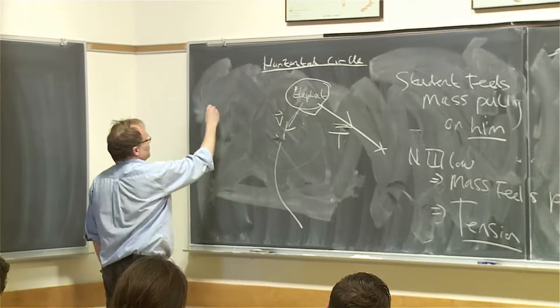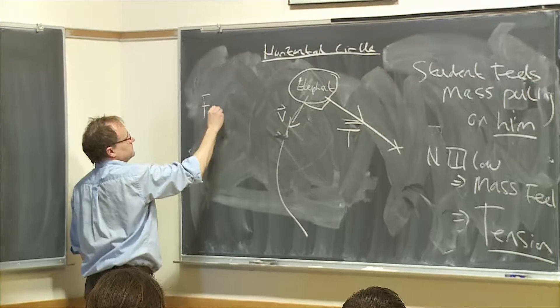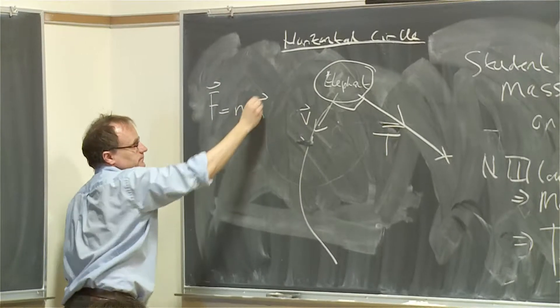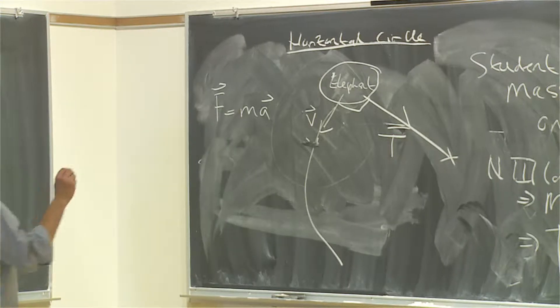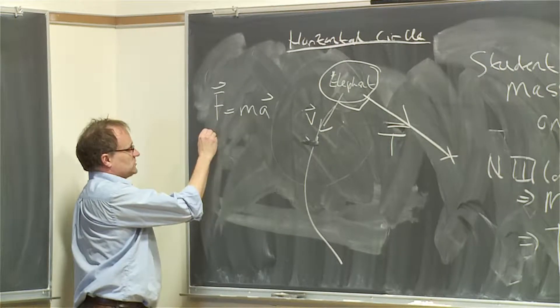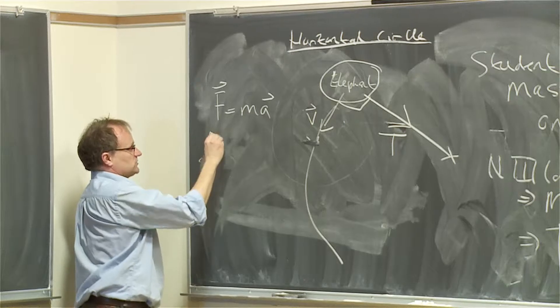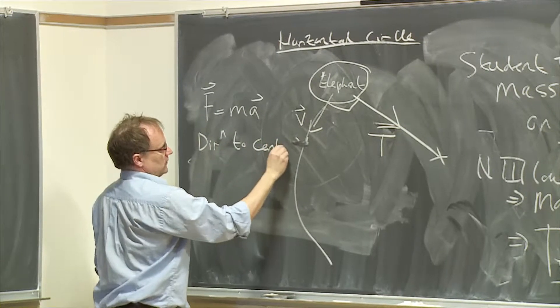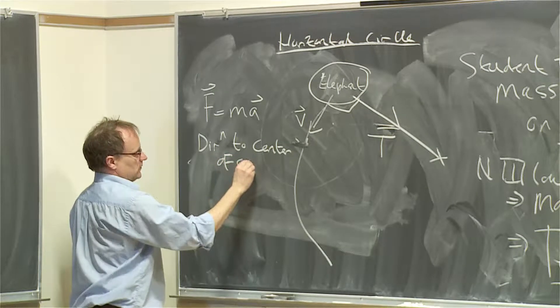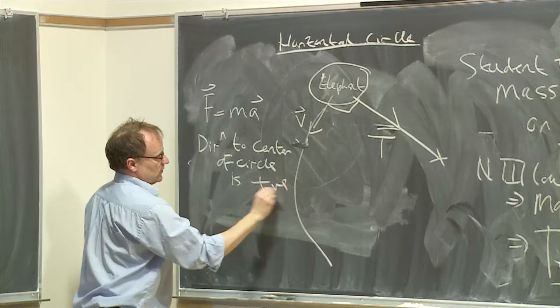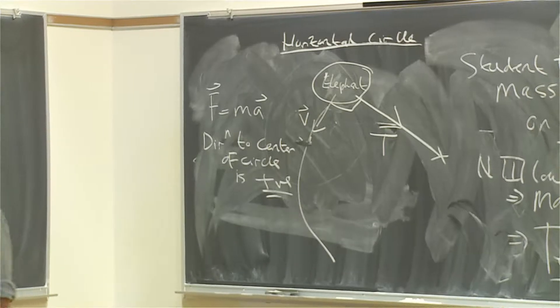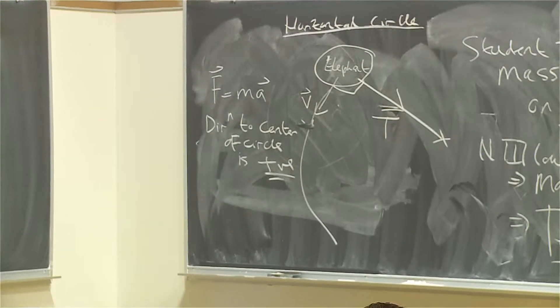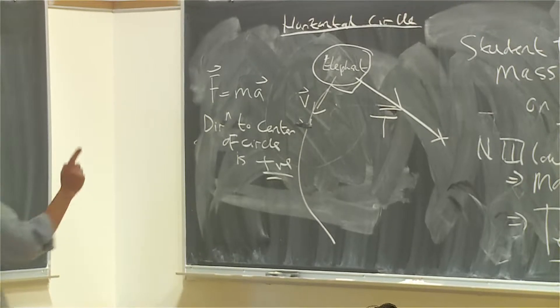So if we write F equals MA, we could write it as a vector. Then if we choose, the convention is that direction to the center of circle is positive. So the direction to the center, that's our convention. It's just going to make things easier that we have a sign convention. The direction to the center of circle is positive.